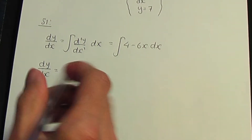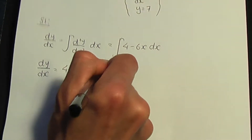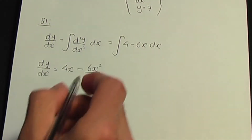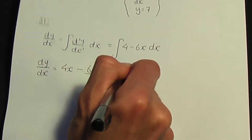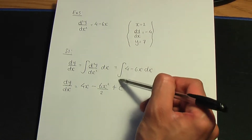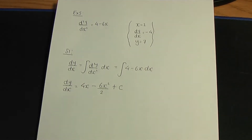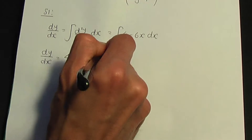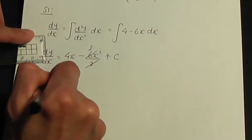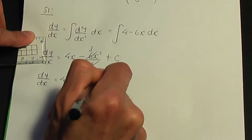When I integrate 4, it gives 4x. When I integrate 6x, it's 6x² divided by 2. Remember to add 1 to the power and divide by the result, and don't forget to add a constant c for the indefinite integral. The 2 cancels with 6 to give 3, so dy/dx equals 4x minus 3x² plus c.